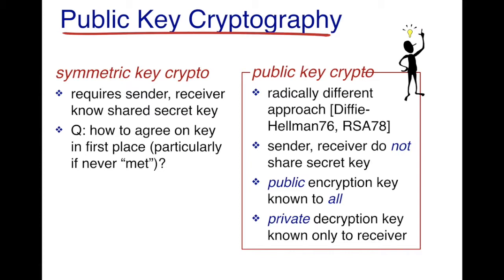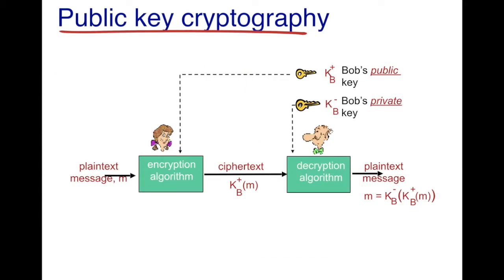Let's see how this works with an example. Assume that Alice wants to send a message to Bob. The plaintext message of Alice is m. Alice takes Bob's public key, denoted by kb+, uses her encryption algorithm, and creates a ciphertext kb+(m). When Bob receives the ciphertext, he applies his private key kb− on kb+(m) and gets the original message m.